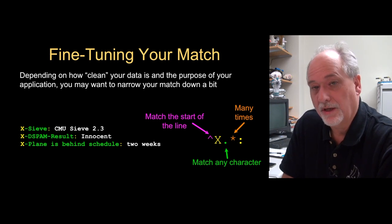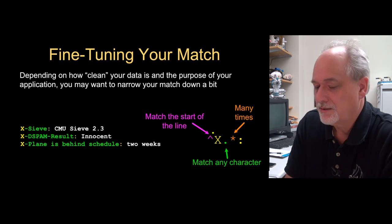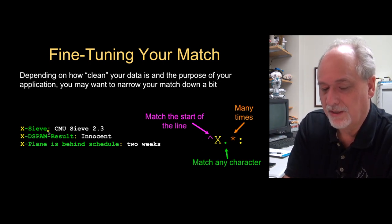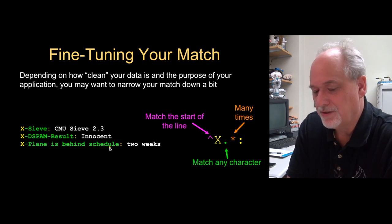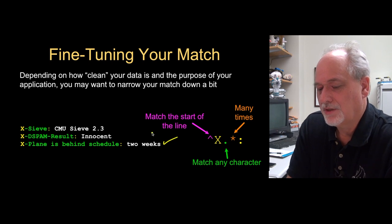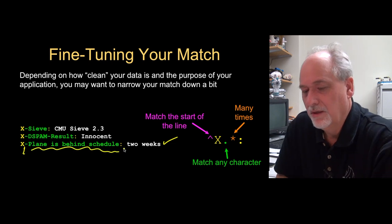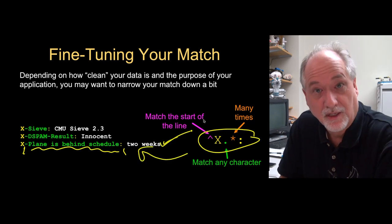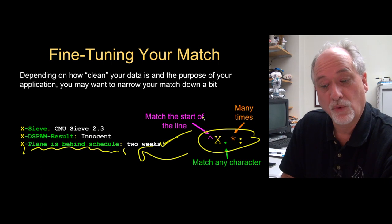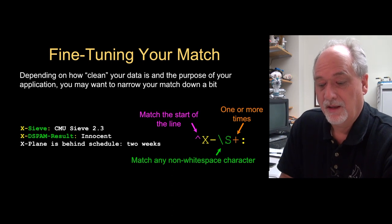Now, sometimes you wanna be a little more clear on your match. So let's take a look at these lines that match that particular thing that we just did. So we have these two. X dash SIV colon, X dash DSTAM dash result. Like these are from mail messages. And then one of the mail messages has a line in it that says X dash plane is behind schedule. And this matches. Is that what you really wanted? And so what we can basically say is because this is an X, this is some number of characters and that's a colon. It matches. It has to match. That's this rule applied to this line results in a yes. It does.